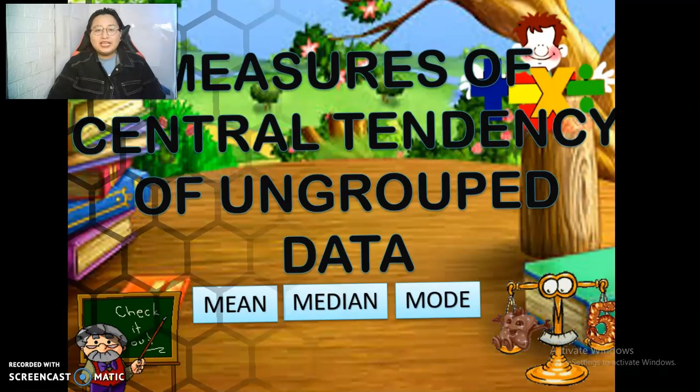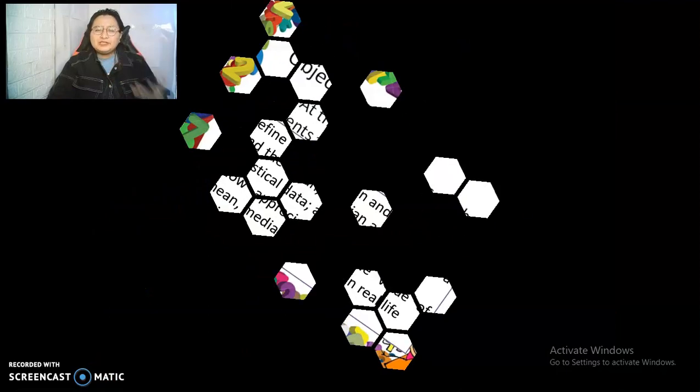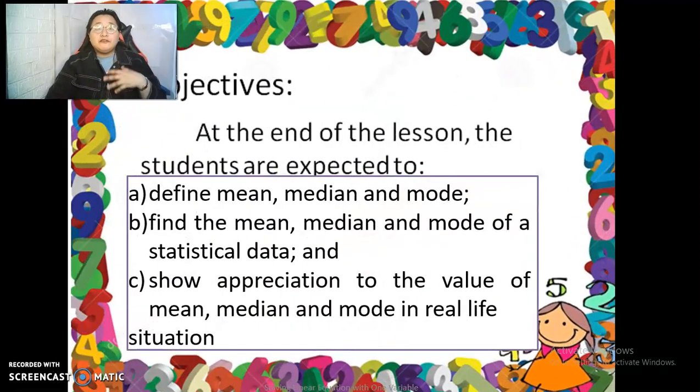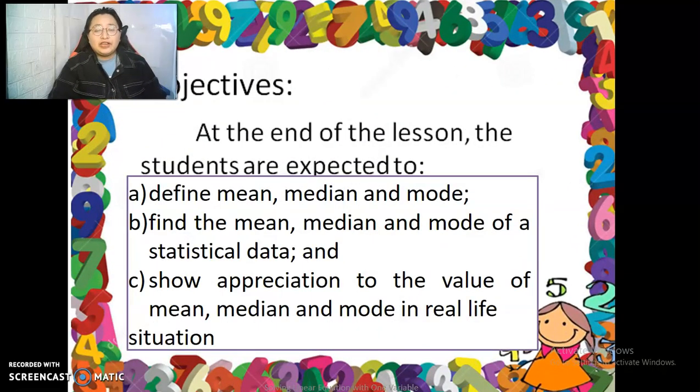These numbers, what you did is something we'll work on in our lesson for today. Our lesson is about the measures of central tendency of ungrouped data. Please bear in mind that we need to be very careful and very attentive in this lesson. Because at the end of the lesson, you are asked to define the three measures of central tendency.